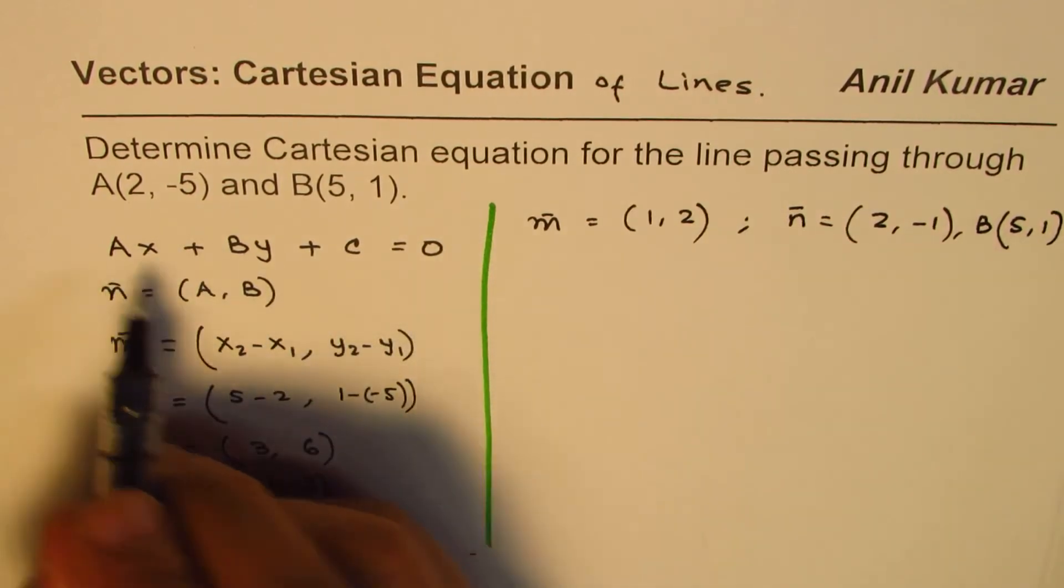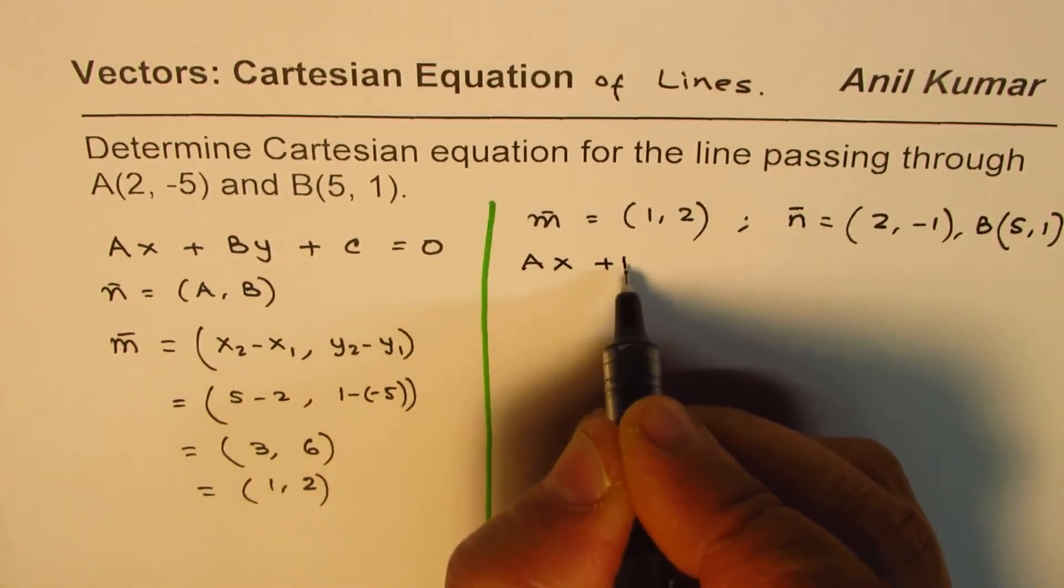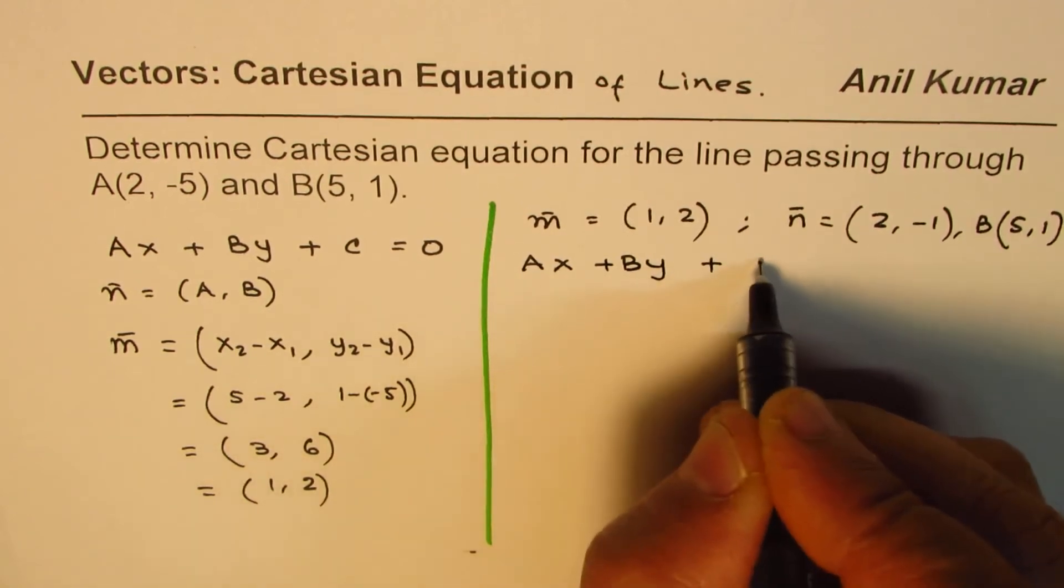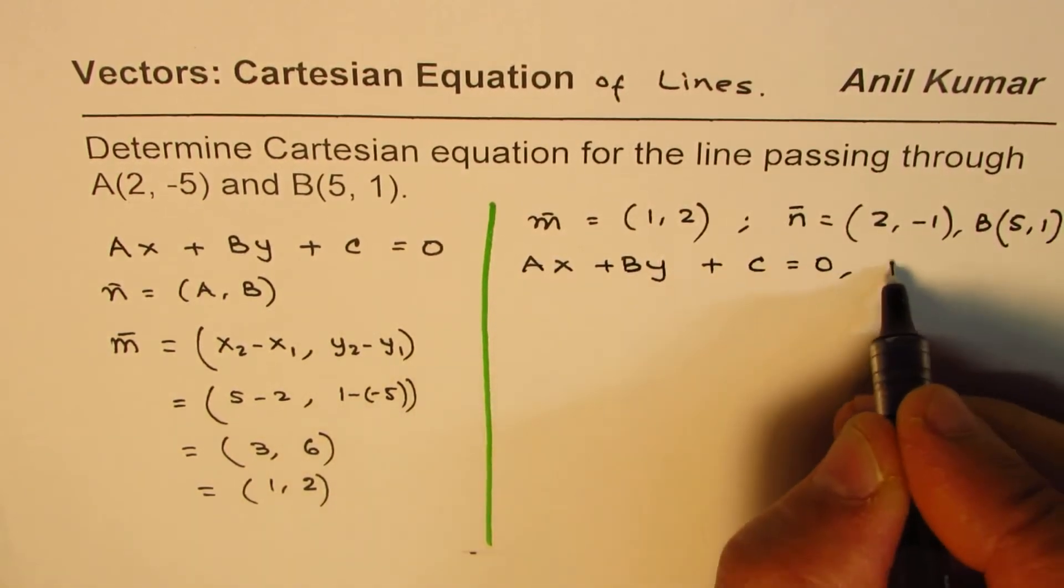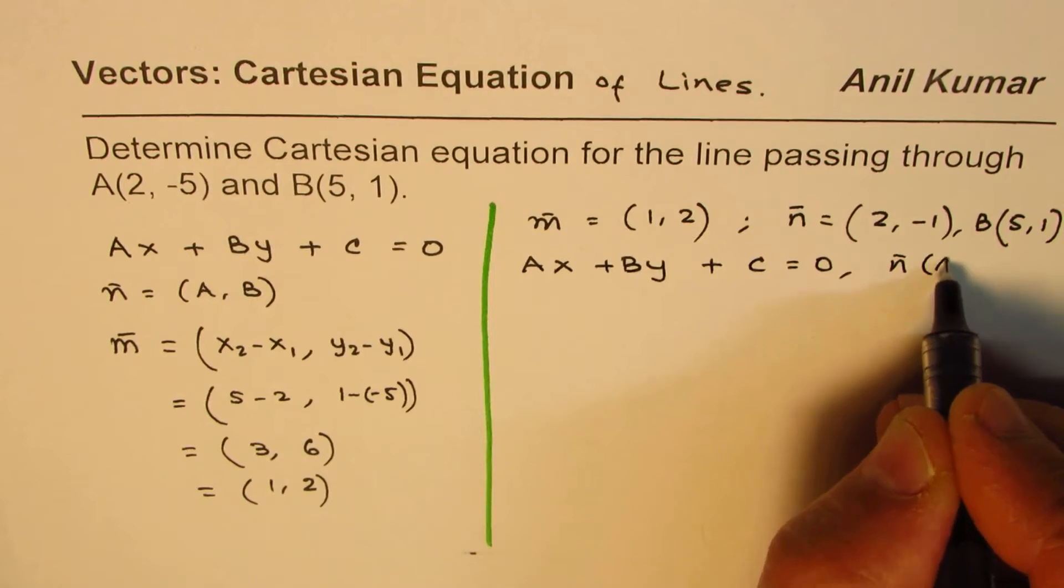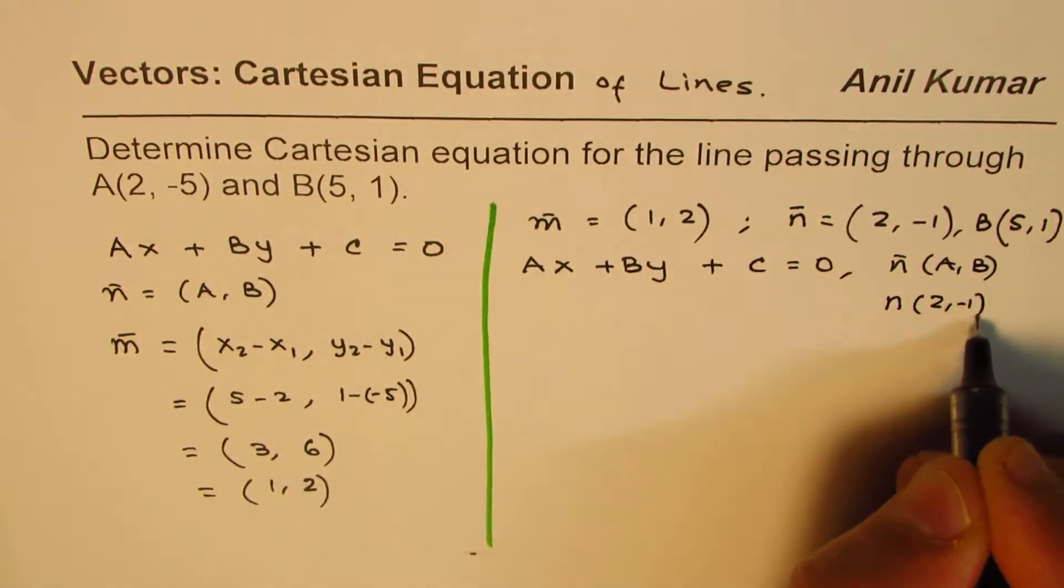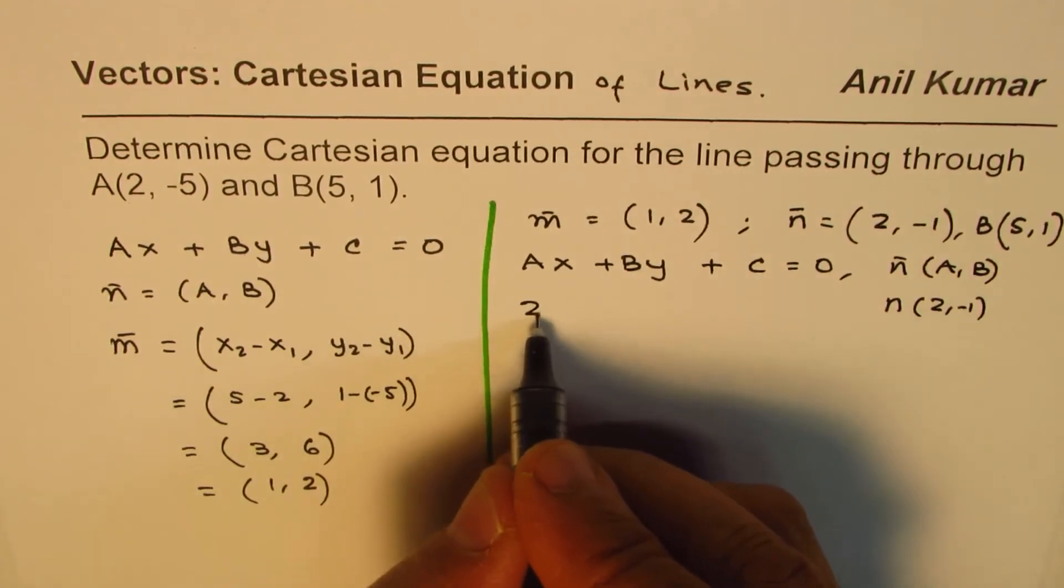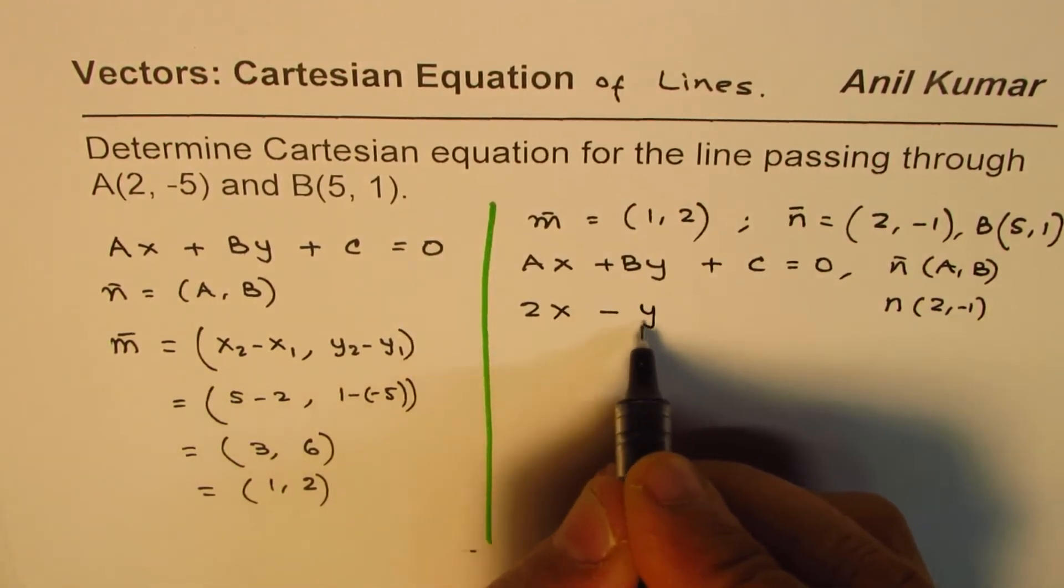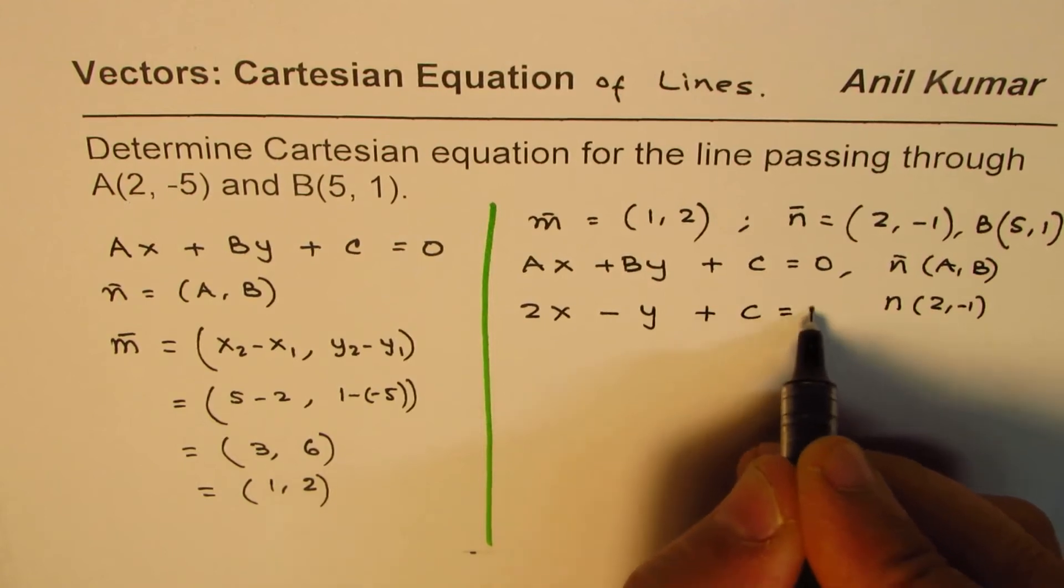So we know the equation is Ax + By + C = 0, where normal is A and B. In our case normal we found as (2, -1). So we will substitute that. So we get 2x - y + C = 0.